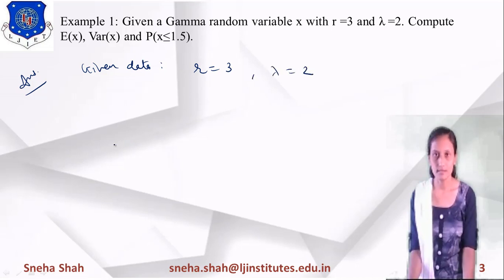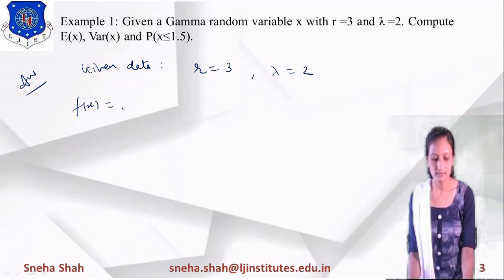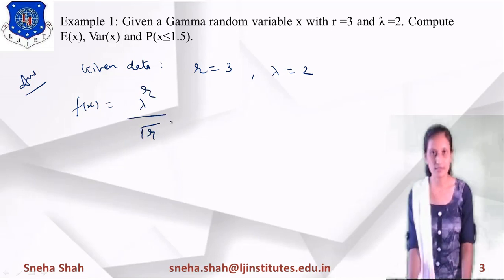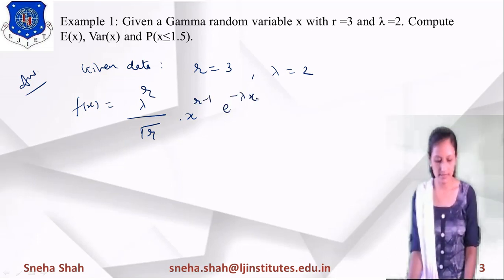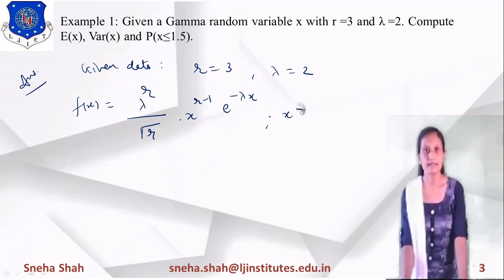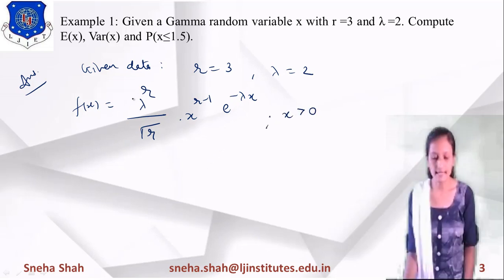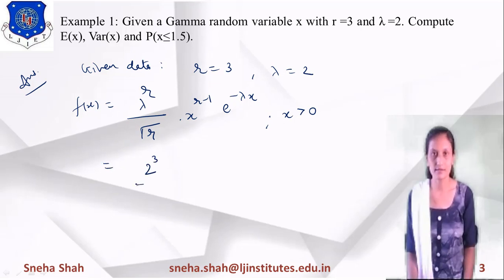First we find f(x). The value of f(x) equals λ^r / Γ(r) · x^(r−1) · e^(−λx), for x greater than 0. Substituting the values of λ and r, we get: 2^3 / Γ(3) · x^(3−1) · e^(−2x).